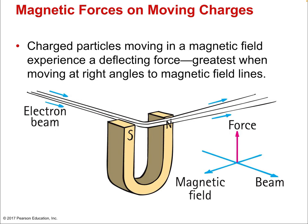Now let's talk about the other direction philosophically. So far we've talked about how electric current creates a magnetic field. But what about the reverse — do magnetic fields create current? Not exactly, but they do exert forces on currents and on moving charges in general. Any charged particle, like a beam of electrons, moving in a magnetic field experiences a deflecting force — a force that deflects the path of the electrons. That force is greatest when moving at right angles to the magnetic field.